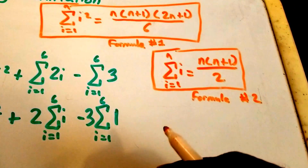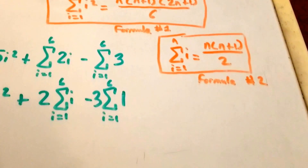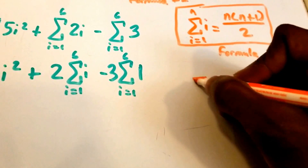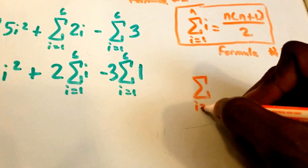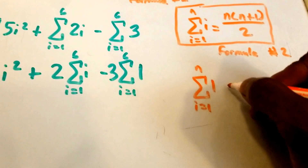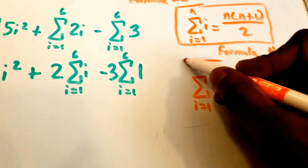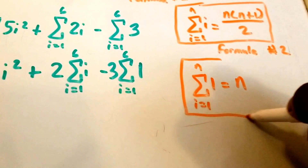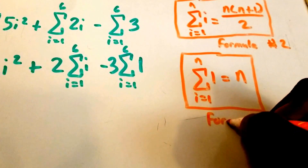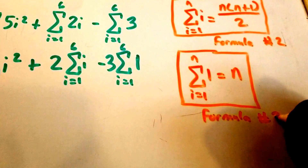We also have a third formula: the summation from i equals 1 to n of 1 is equal to n.